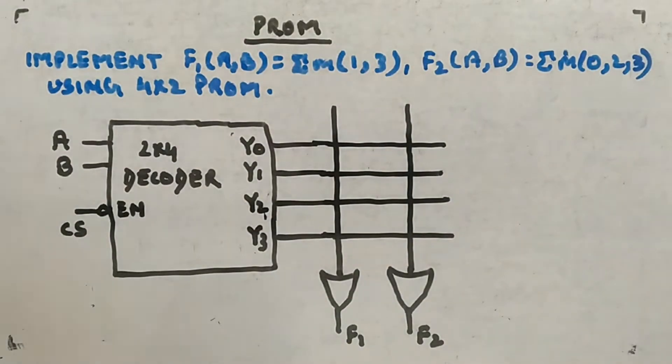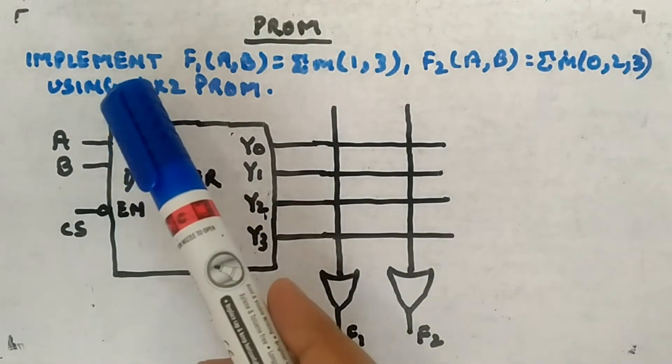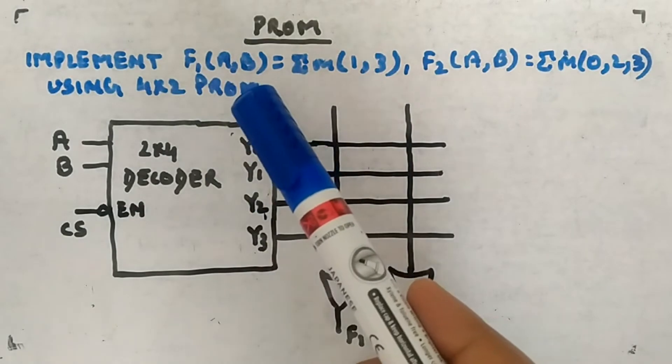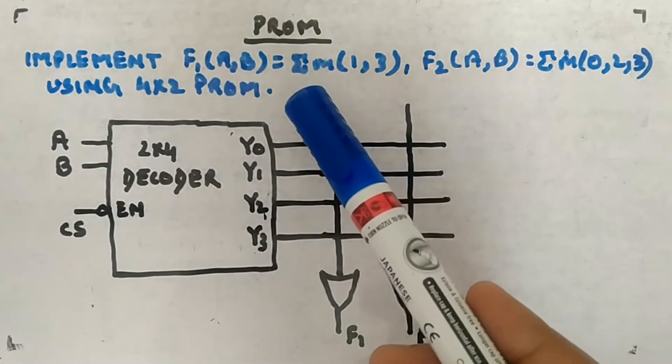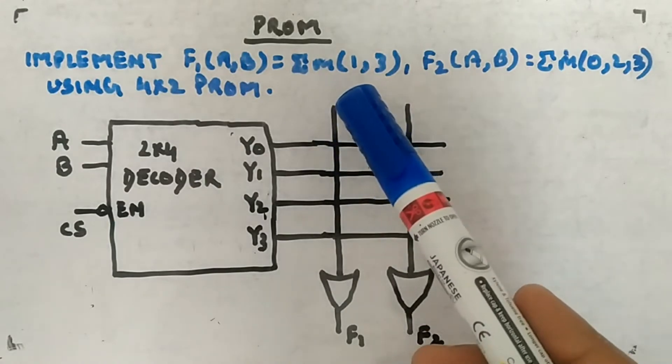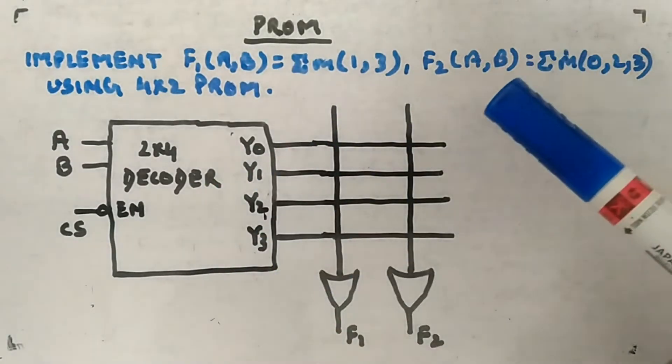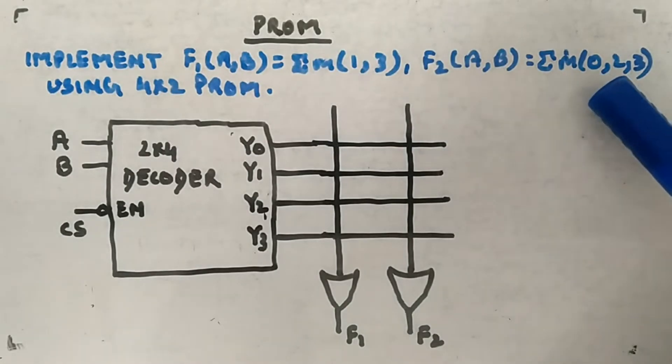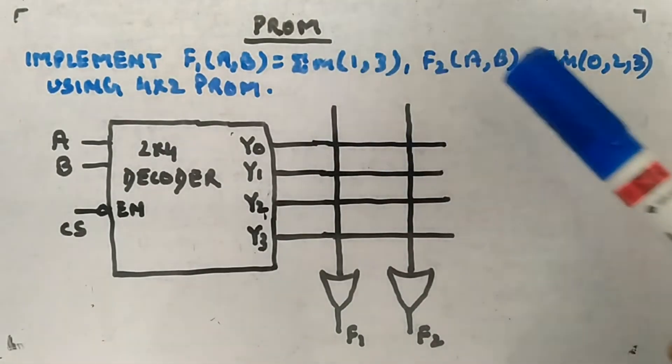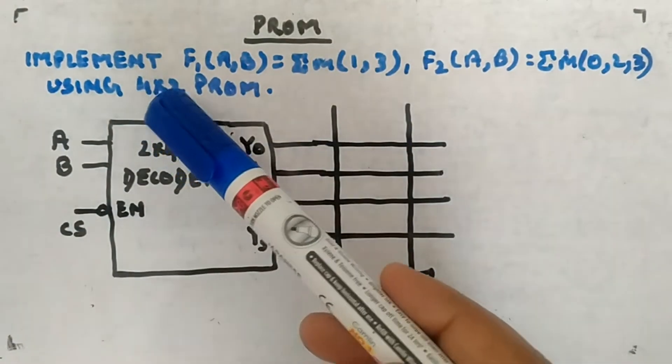Okay, let's look at another example. We have to implement function F1(A,B) equals sigma m(1,3), where A and B are input variables and the minterms are 1 and 3. The second function F2(A,B) equals sigma m(0,2,3). So two functions we have to implement using 4×2 PROM.